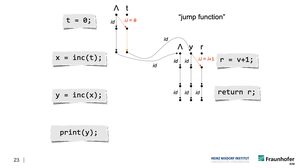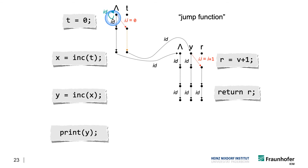We start with the initial jump function — just like an initial path edge — but annotated with an initial edge function, in this case the identity function because nothing has happened yet. Now we want to extend this partial summary. We have a summary that ends here and flow functions that bring us to the next nodes. We want to extend this jump function to other jump functions that lead to these two nodes, and prolong them directly to the next statement.